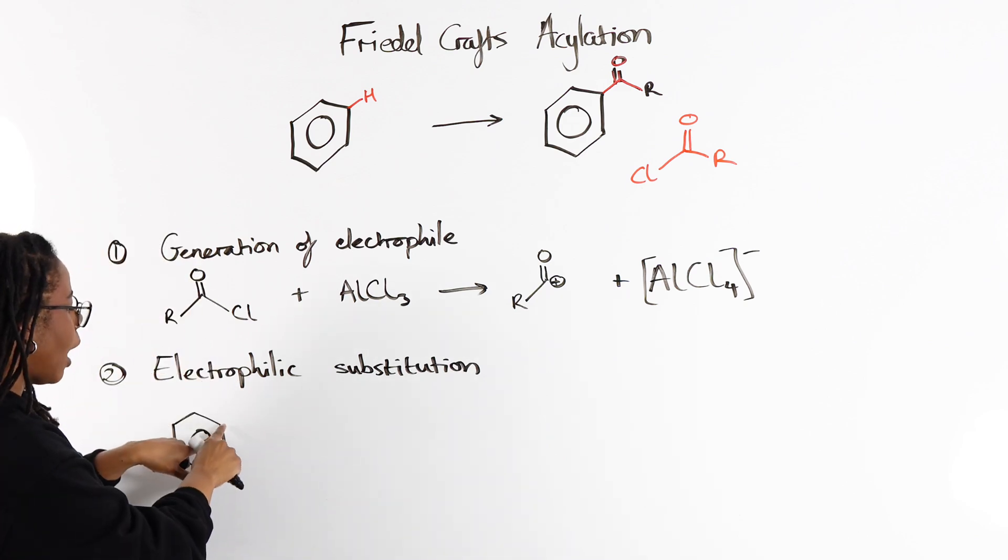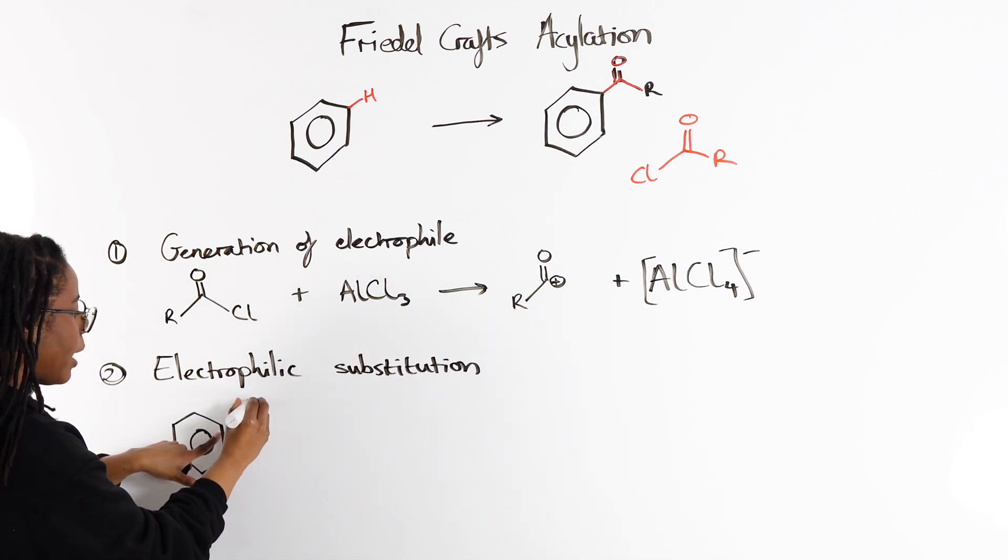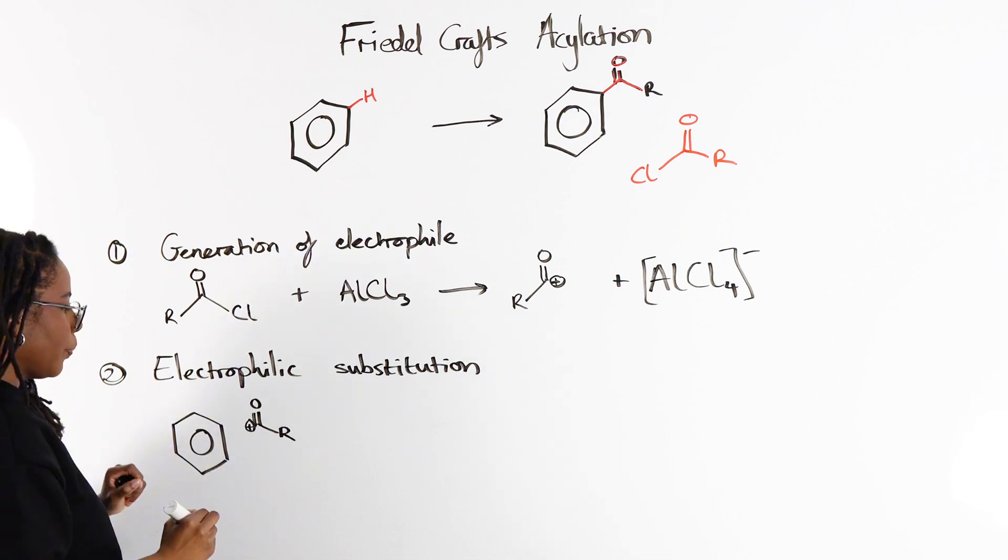My tip, and this is what I do myself, is I place this positively charged carbon right next to the carbon that I'm going to be substituting on. If I want this group on this carbon, then right next to it, that's where I'm going to draw my electrophile.